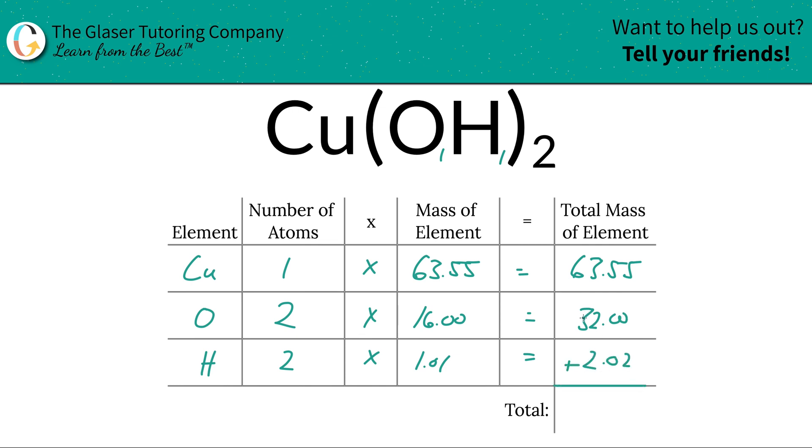And then to find the total mass of the entire compound now, just simply add up all the individual total masses of each element. And that works out to be 97.57. Since we're solving for molar mass, the units here are in terms of grams per mole. And that's all there is to it.